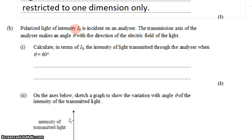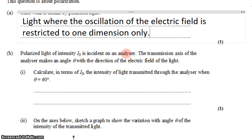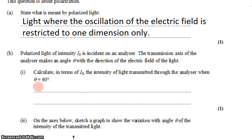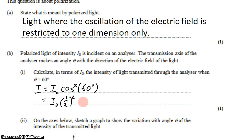If we have polarized light with an intensity I₀ and shine it onto an analyzer, the transmission axis of the analyzer makes an angle theta with the direction of the electric field of the light. We rotate the analyzer around the light making angle theta. The question asks us to calculate, in terms of I₀, the intensity transmitted when that angle is 60 degrees. Using the relationship in the data booklet, intensity equals I₀ times cosine squared of theta. Cosine of 60 degrees is one half, and squaring that gives one quarter. So the intensity is I₀/4 — a quarter of the peak intensity.